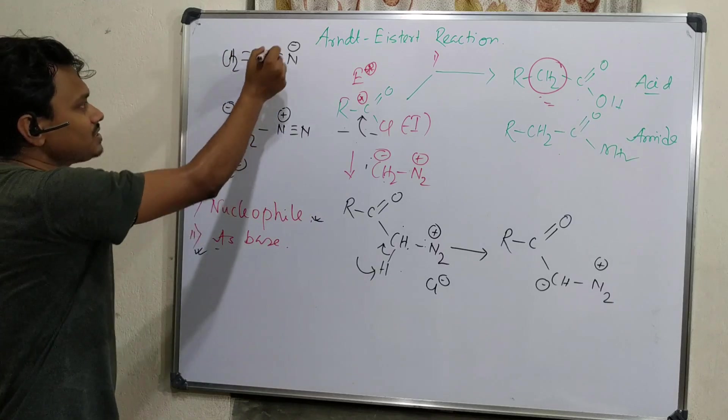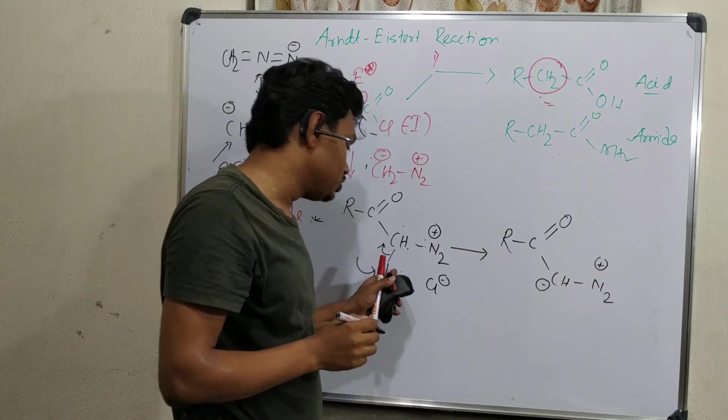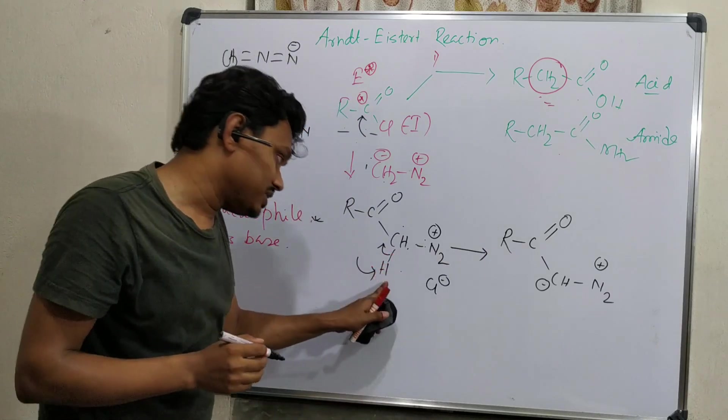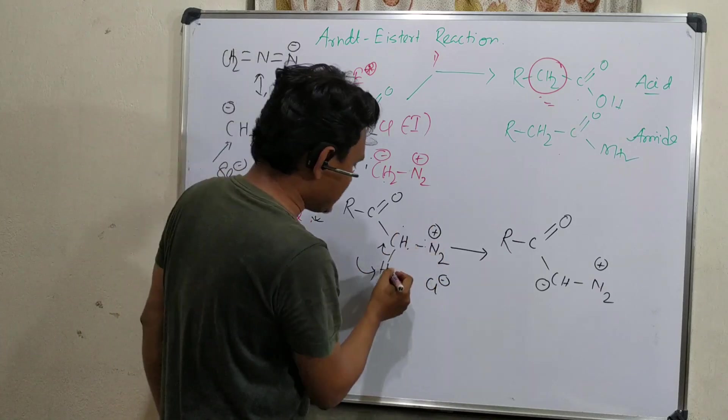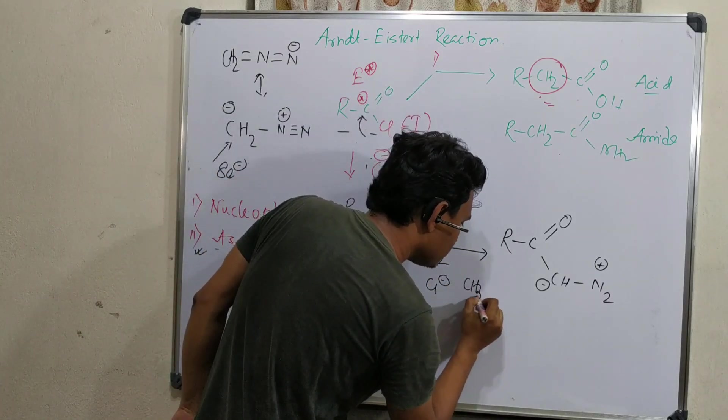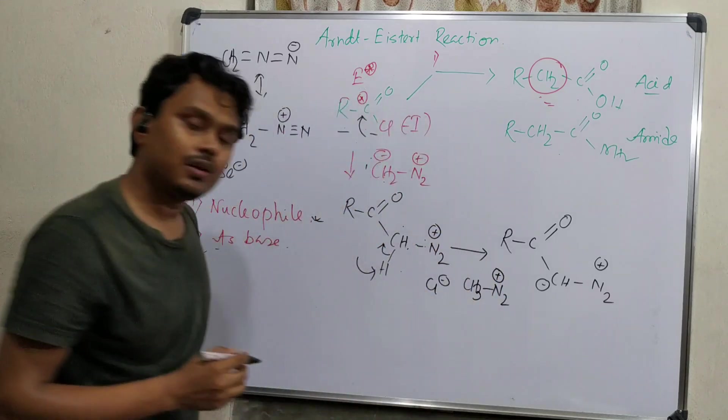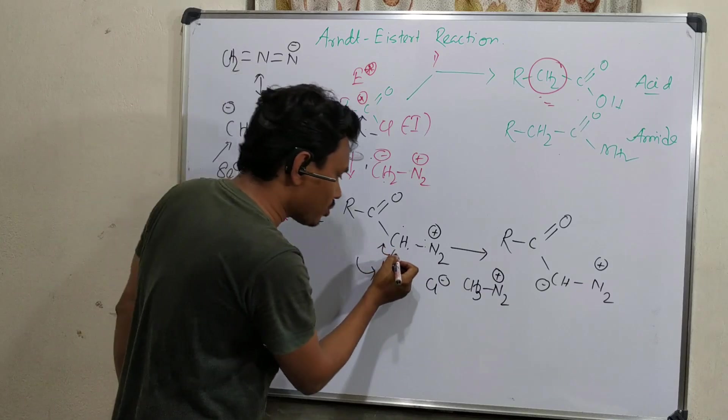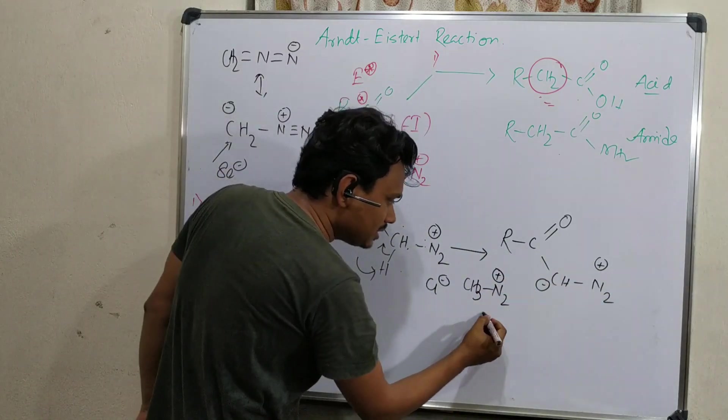What happens after this proton abstraction? Diazomethane becomes CH3NH+. Consequently, when this proton abstraction happens, it becomes neutral because this is minus, this is plus. So this plus, and another chloride was there in the reaction medium.